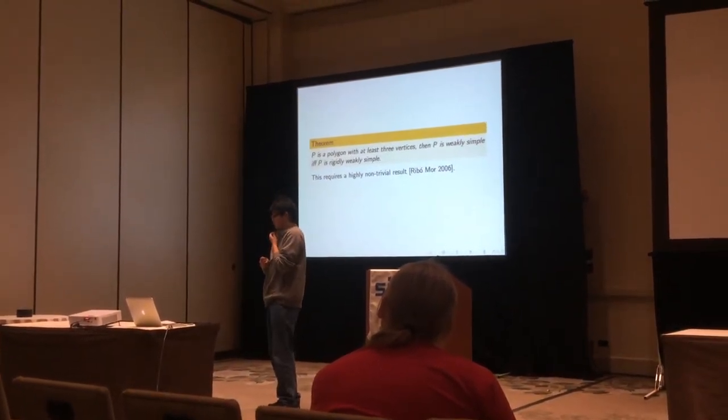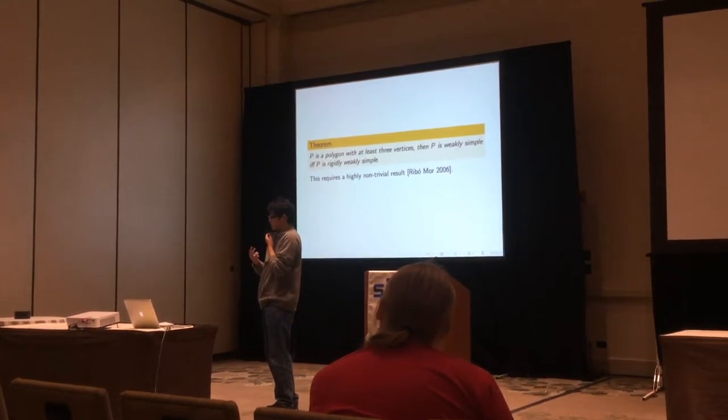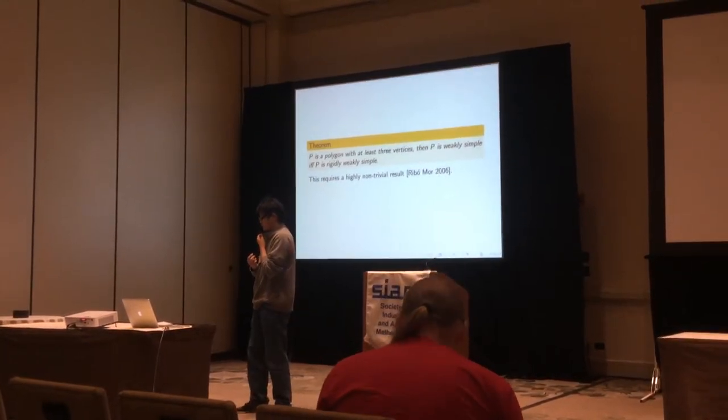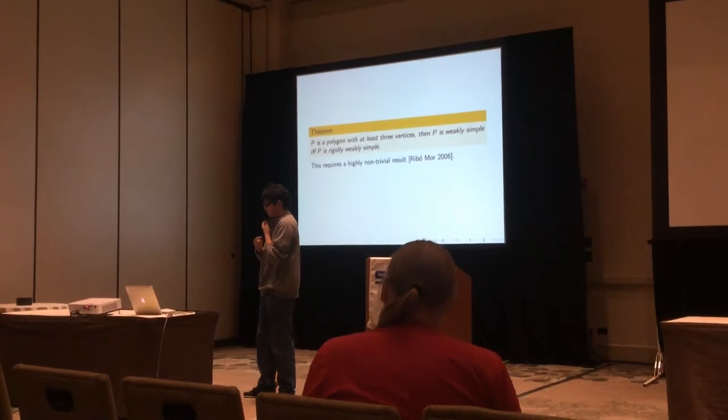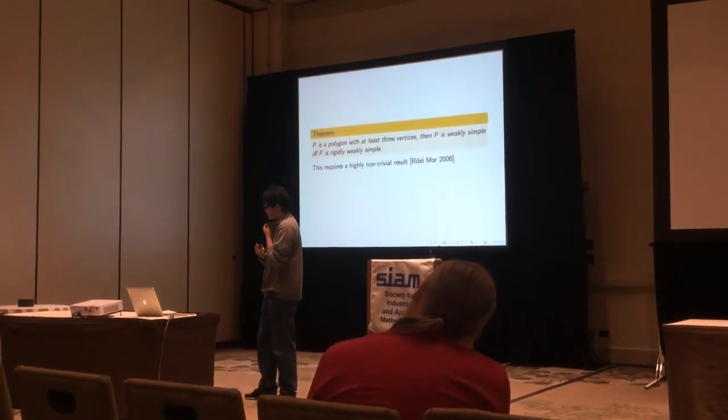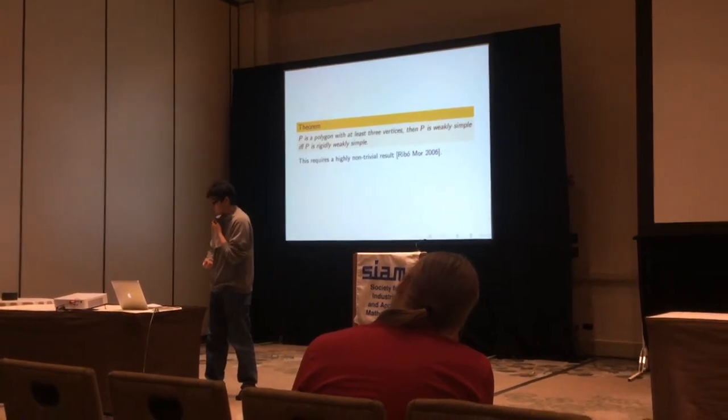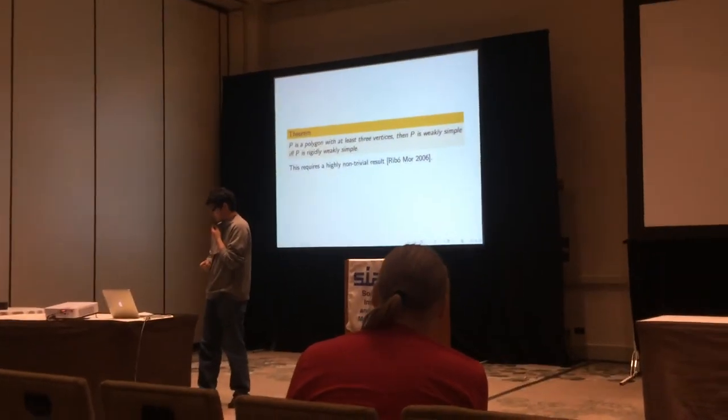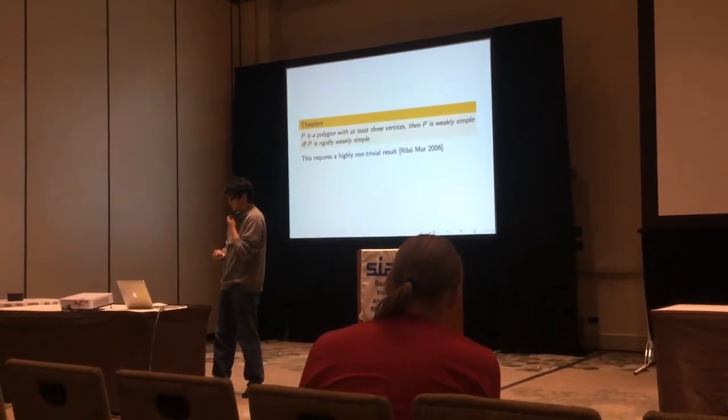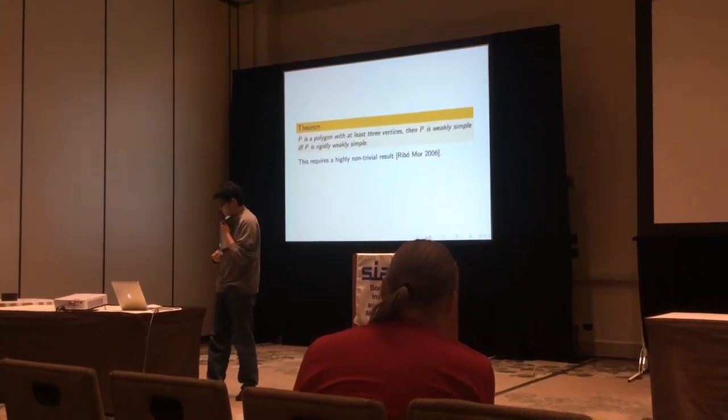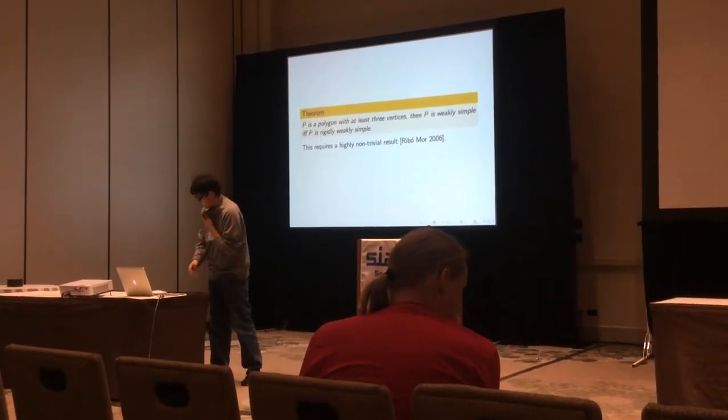So the theorem shows those two definitions are essentially the same for polygons. So if P is a polygon with at least three vertices, then P is weakly simple if and only if P is rigidly weakly simple. And this requires a nontrivial result. So this is intuitive, but it's not easy to prove.